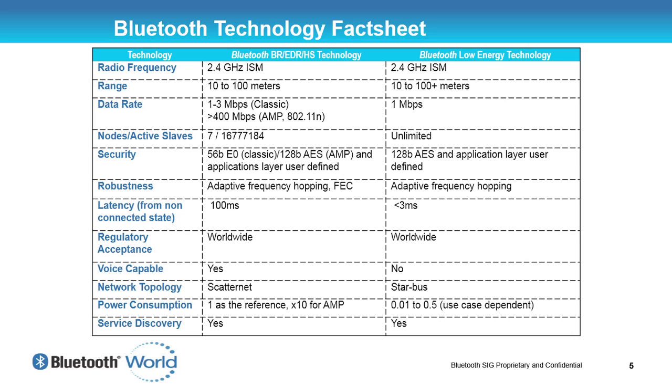In terms of robustness, both technologies use something called Adaptive Frequency Hopping, which allows devices to adaptively hop around other interferers in the 2.4 GHz band.